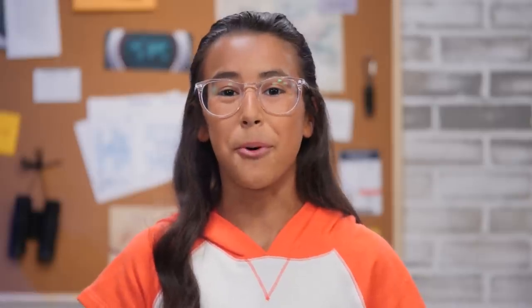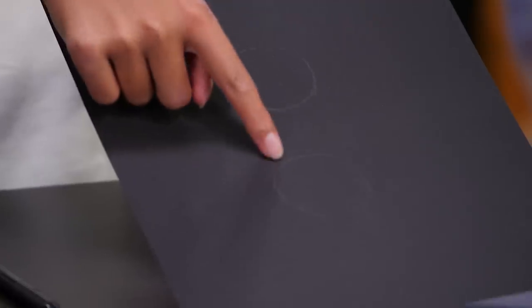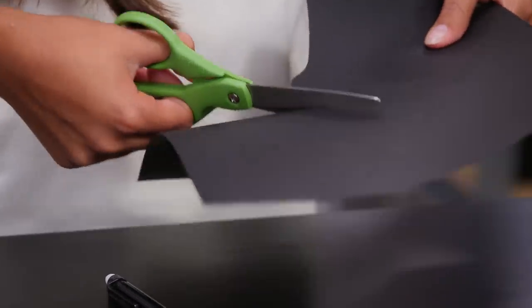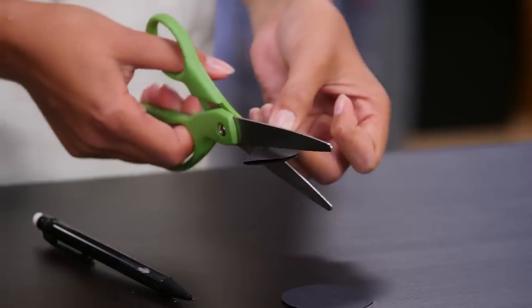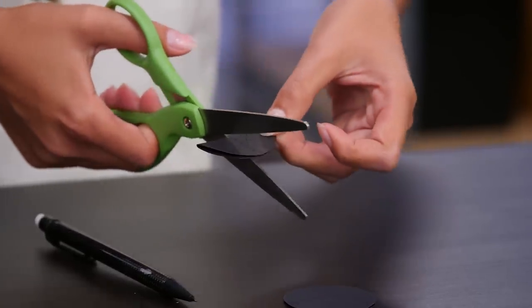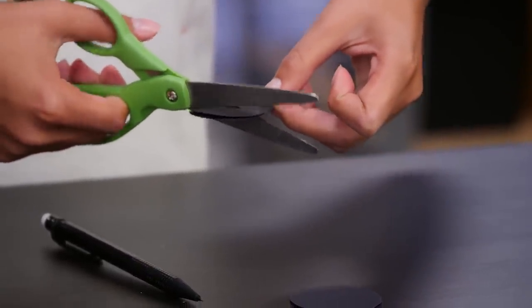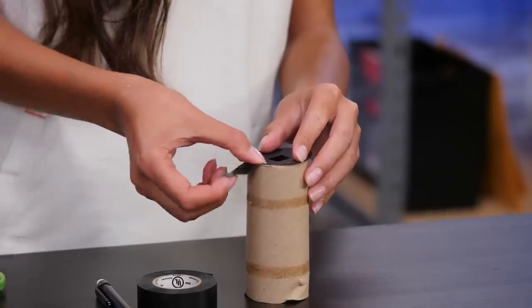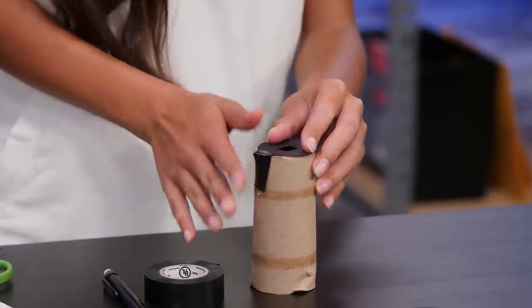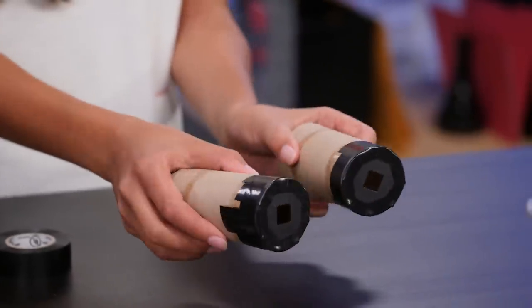Use a toilet paper roll to trace two circles on your black card stock. Cut them out. Fold one of the circles in half. Cut a diamond shape in the middle, like this. Repeat for the other circle. Tape a circle to one of the ends of your toilet paper rolls. Do this for your other toilet paper roll.